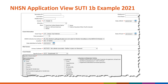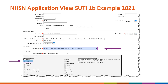When the HAI SUTI 1B event is entered into the NHSN application, urinary catheter is set to NEITHER — not catheter associated, neither in place nor removed. Fever is available for this patient who is greater than 65 years of age.